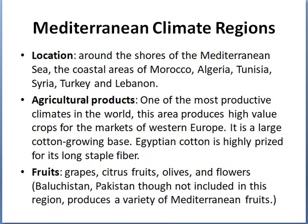The next region is the Mediterranean climate. Its location is around the shores of the Mediterranean Sea — the coastal areas of Morocco, Algeria, Tunisia, Syria, Turkey, and Lebanon. These regions have one of the most productive climates in the world and produce high-value crops for markets of Western Europe. It is a large cotton-growing base, and especially Egyptian cotton is highly prized for its long staple fiber. The fruits include grapes, citrus fruits, olives, and flowers.